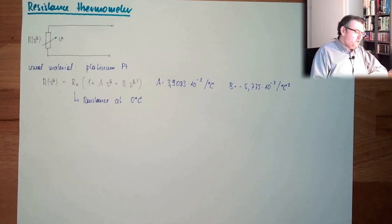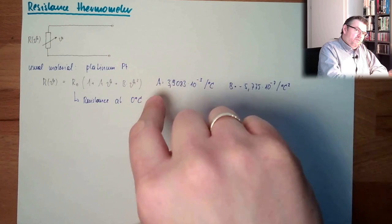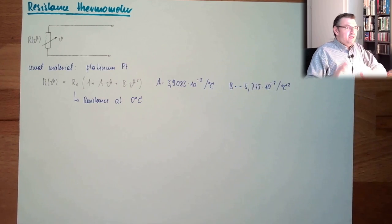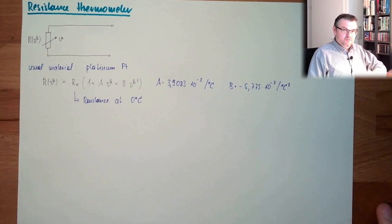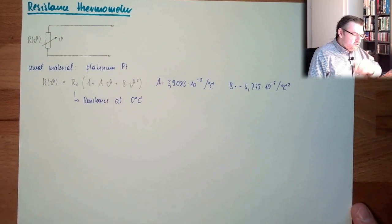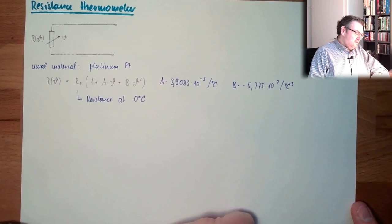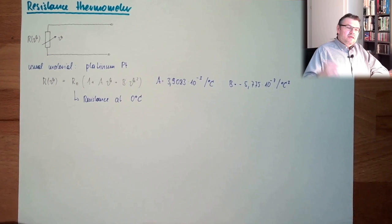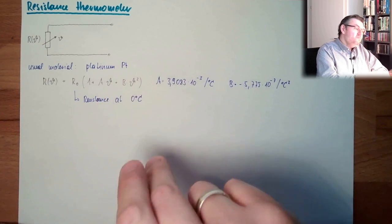Former times also nickel was used. But however, nickel you need, you know, raised by the power of 3, 4, and 5, and so on. And then you have a small window. It's by far not that linear like platinum. So, you need by far more of those factors. And this does not make it easier. And also, at areas below 0 degrees Celsius, nickel had some issues. So, nowadays, the usual material for measurement purposes is platinum.